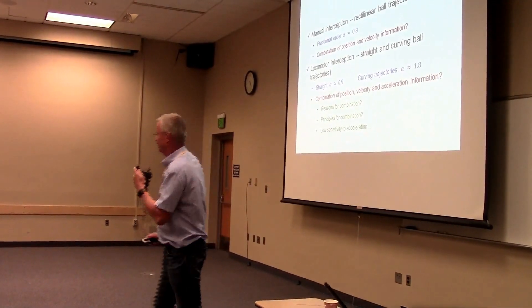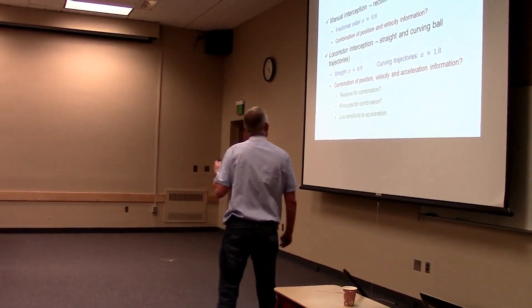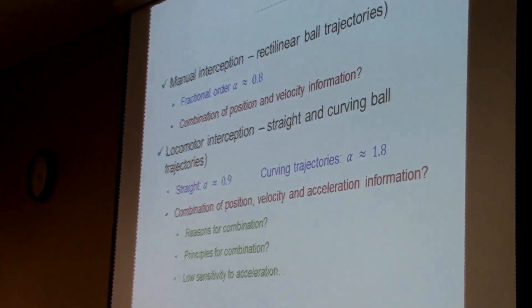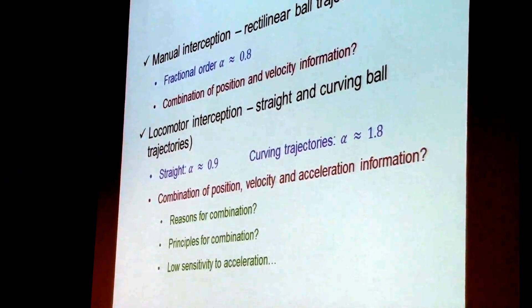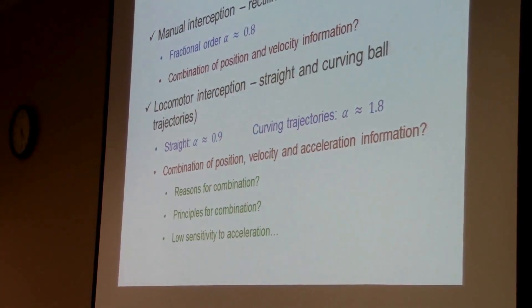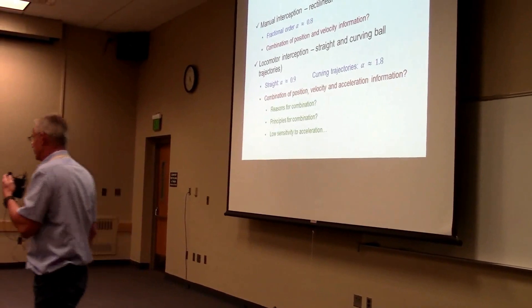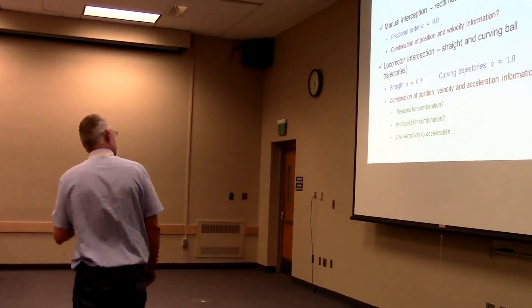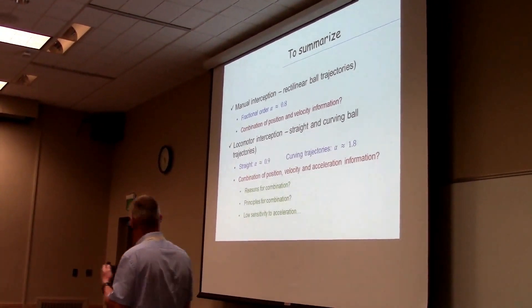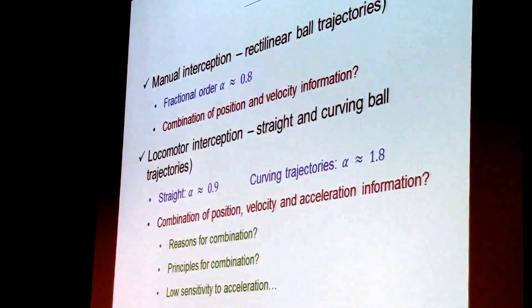Let's wrap up, but before Bill shoots this out of the air. What did we show? We showed that in manual interception, Simon, you can capture with a fractional order of alpha 0.8, you can capture the phenomena. You could, of course, argue that in the way we did it, 0.8 is just a weighting of position and velocity. In the locomotor interception stuff presented by Rémy, we found that in order to model straight and curving trajectories, the subjects, of course, the participants never knew what trajectory was coming. They didn't know there were straight trajectories or curving trajectories, that the straight trajectories required an alpha of approximately 0.9, just below 1, and the curving trajectories between 1.7 and 1.8. There you could, of course, argue that you can get that by combining position, velocity, and acceleration.